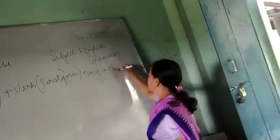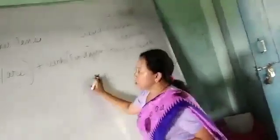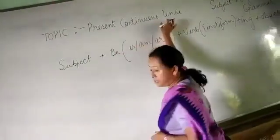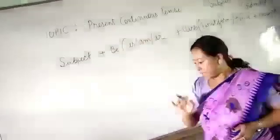And after that, there will be the object. So, this is the structure of a sentence in present continuous tense. Let's write an example.